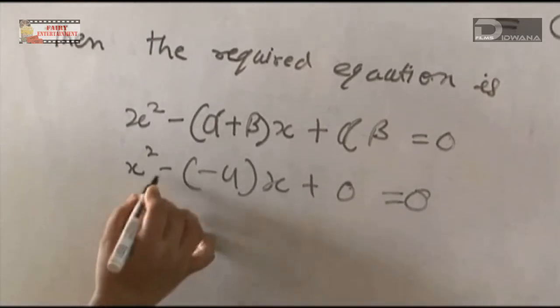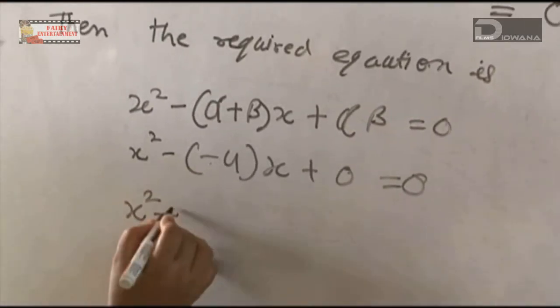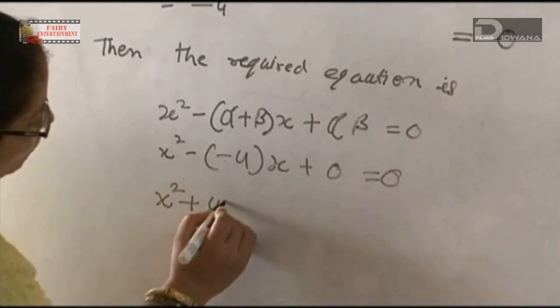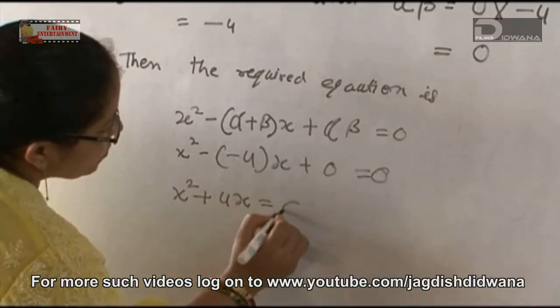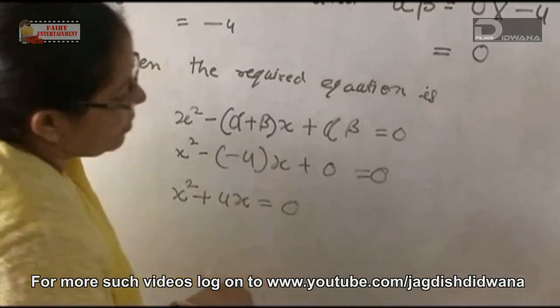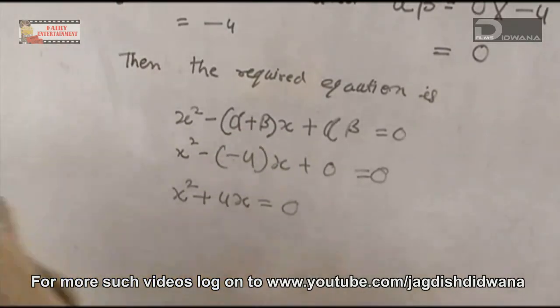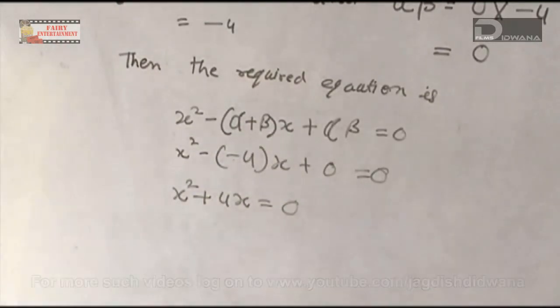x squared minus minus 4x equals 0, which simplifies to x squared plus 4x equals 0. This is our required equation.